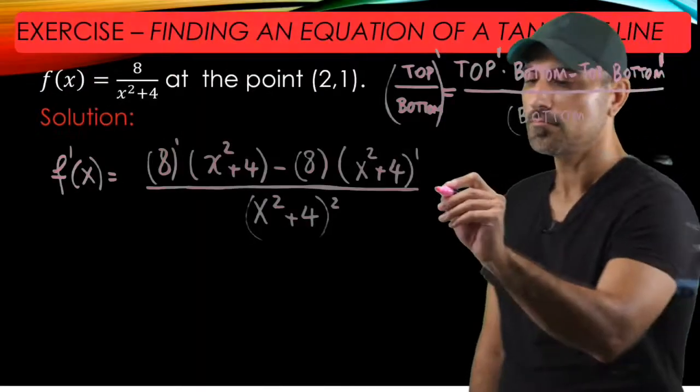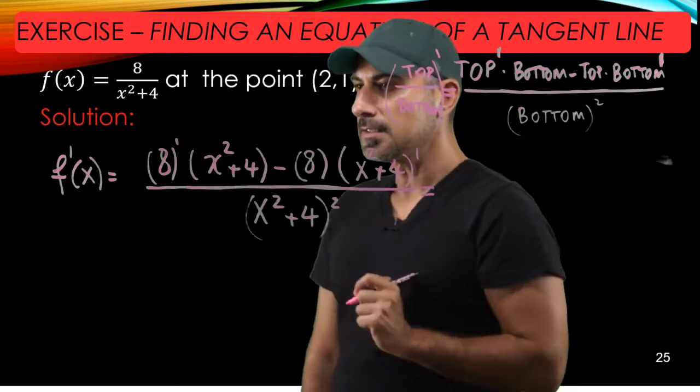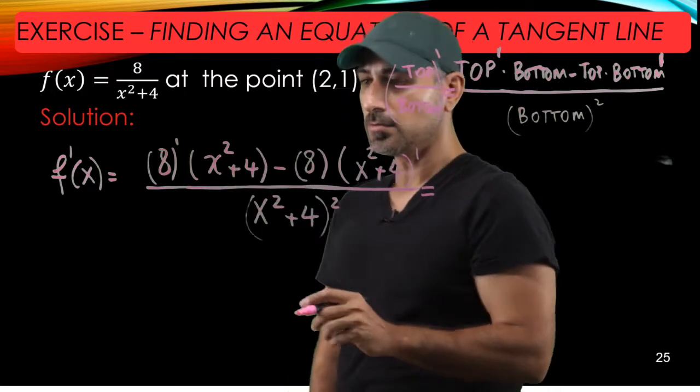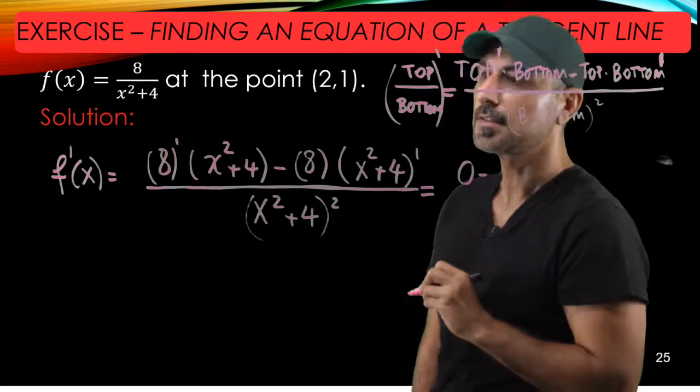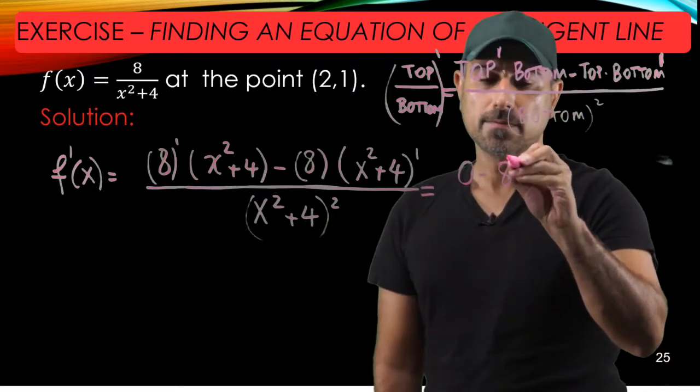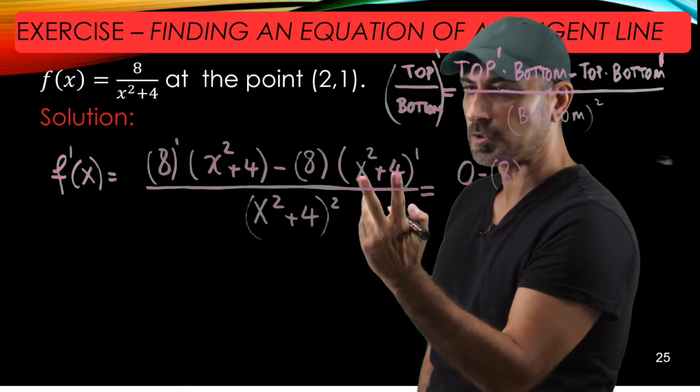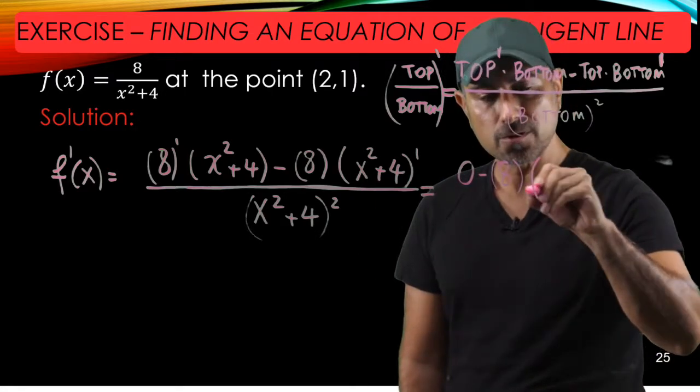Well, 8 is a constant and we know that the derivative of a constant is 0, so 0 times this quantity is going to be 0. Minus, let's keep 8 and we take the derivative of the sum here, but the sum has two pieces: one is x squared, the other one is 4.